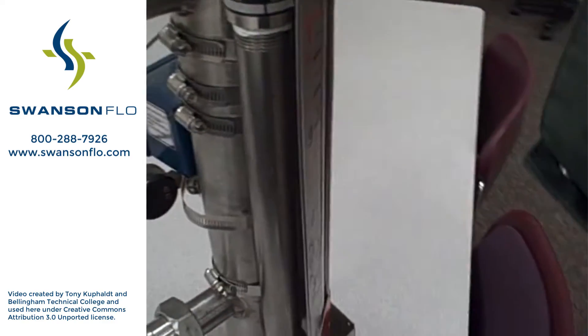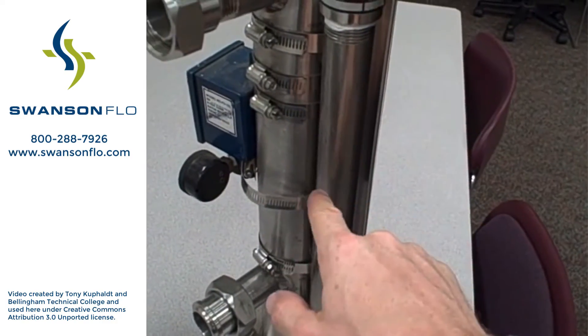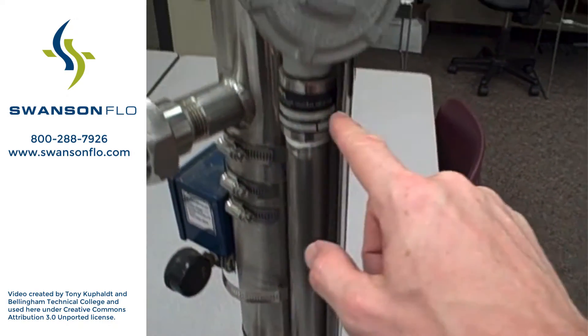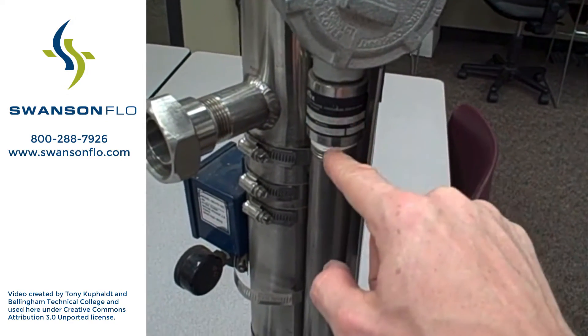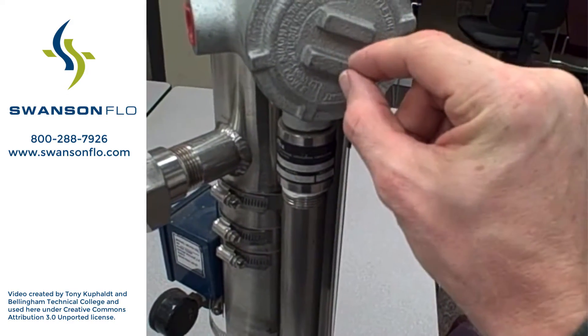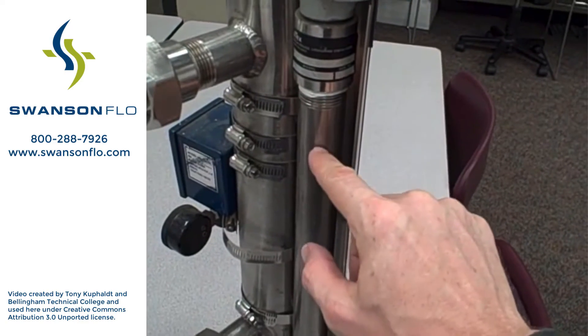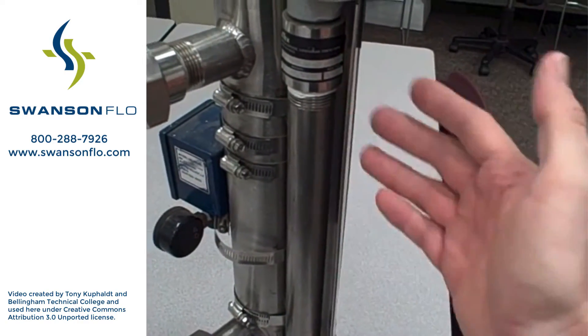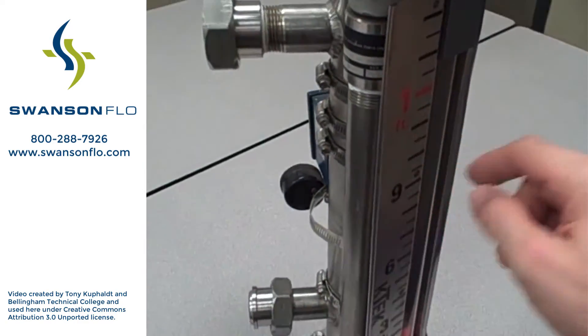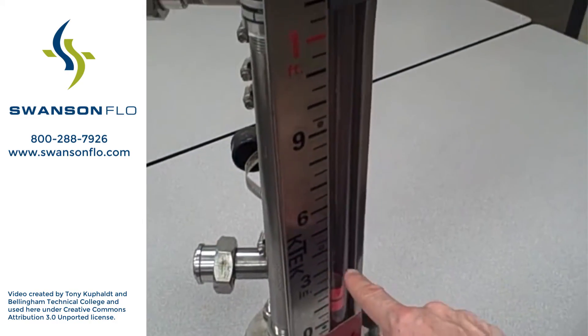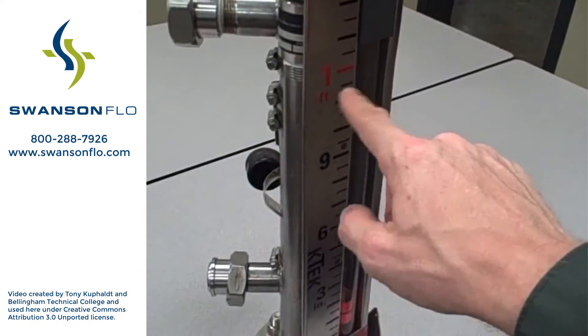Also, it means we can attach other devices to this which can likewise sense the position of the float. For example, this accessory right here is a level switch. It closes an electrical contact every time the level exceeds a certain point. In this case, it happens to be a high-level switch. It does not activate until the magnetic float rises to a fairly high level on the marker.